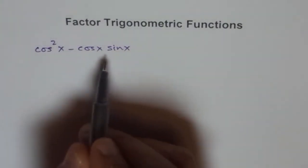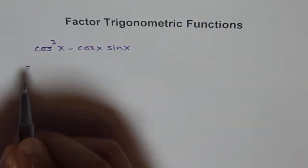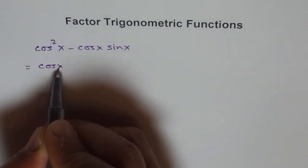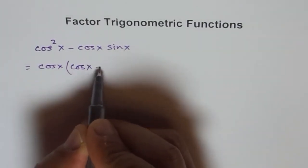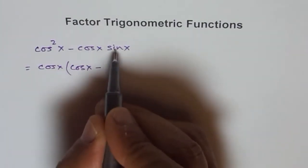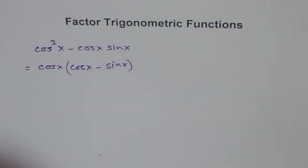So if you have a situation like this, what you can do is you can always factor out cosx. This could be written as cosx, and then you have cosx here. So cosx has been factored out so you're left with cosx minus sinx. That is the kind of thing which you can get.